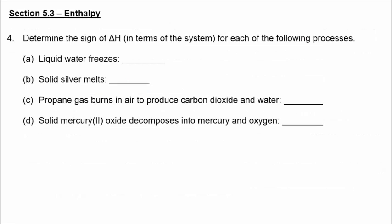If liquid water freezes, going from liquid to solid, we decrease the overall energy — energy is lost, that's exothermic, negative delta H. The opposite, melting, is an endothermic process with a positive delta H. Burning propane is an exothermic reaction, negative delta H. Converting mercury oxide into its elements requires heat to be added — that is an endothermic process, positive delta H.